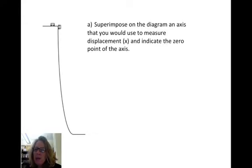The first question asked you to superimpose on the diagram an axis that you would use to measure displacement and indicate the zero point of the axis. We did this in class, but what we're going to do is just draw a line where the beginning is zero at the top of the cliff and then it goes down. I indicated positive as down to indicate the displacement is positive. So that's the x-axis and the M indicates that the units are meters.